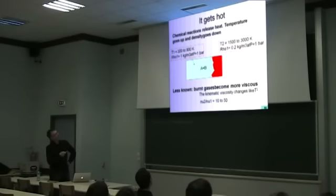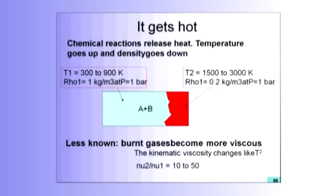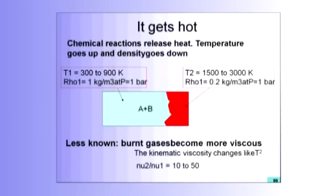The density will be of the order of one kilogram per cubic meter. If you are at one bar — in a real engine you will be at 20 bar, 40 bar; in a diesel engine you will be at more than 100 bar; in a rocket engine also more than 100 bar. When these things burn, you get to a second stage with a temperature of the order of 2000 K. The pressure will be the same, but the density will be much less. If you just look at the state equation: you are warm, you are light.